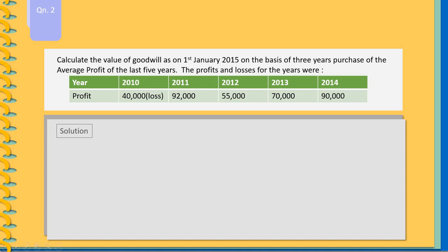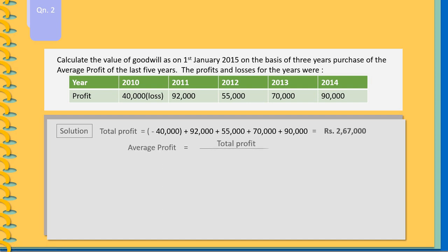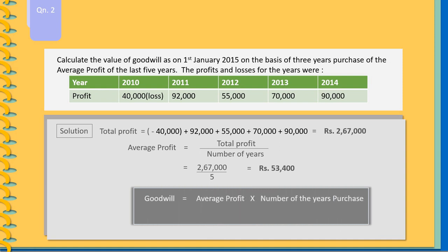The total profit is equal to minus 40,000 plus 92,000 plus 55,000 plus 70,000 plus 90,000, that is 2,67,000. Average profit equals total profit divided by number of years: 2,67,000 divided by 5 equals Rs. 53,400. Goodwill equals years of purchase into average profit: 53,400 into 3, that is Rs. 1,60,200.